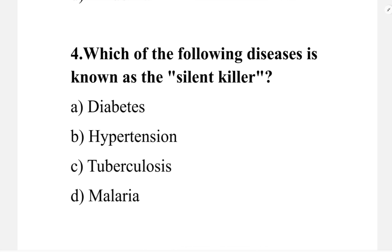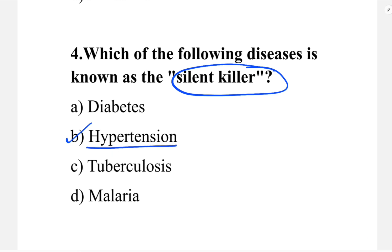Next question: which of the following diseases is known as the silent killer? Option A: diabetes. Option B: hypertension. Option C: tuberculosis. Option D: malaria. The correct answer is option B, hypertension. It is also called high blood pressure. It is called a silent killer because it can go undetected for a longer period of time and can lead to death.